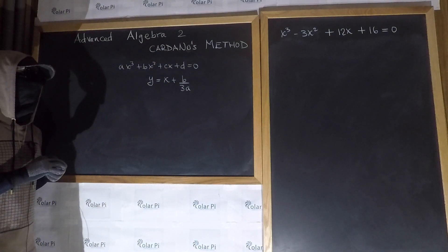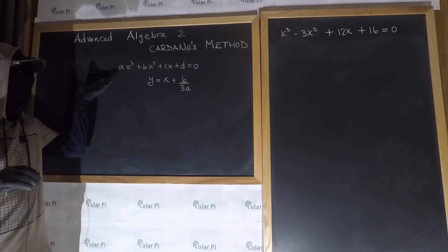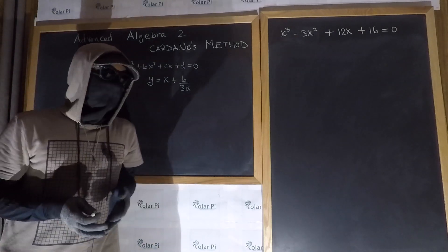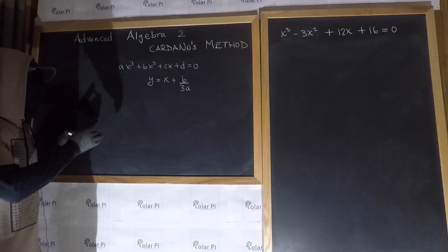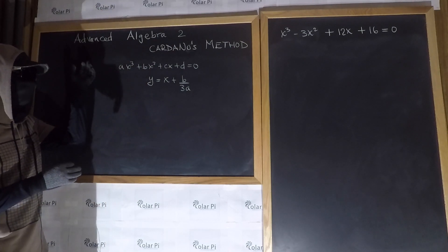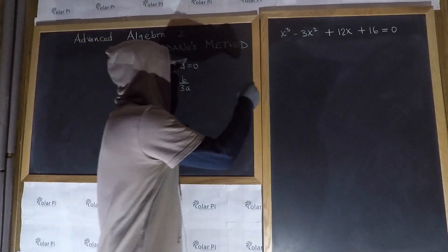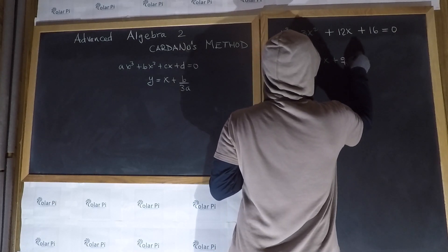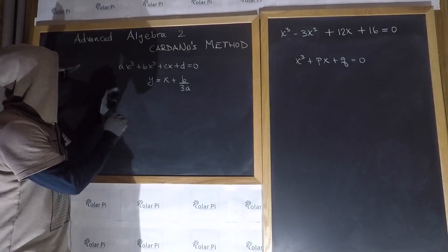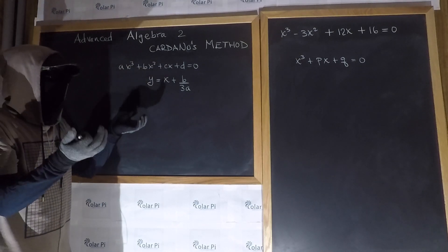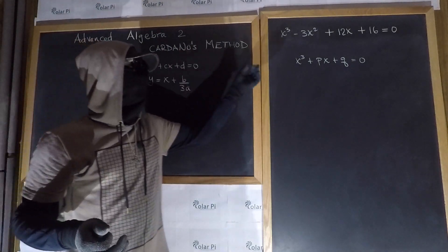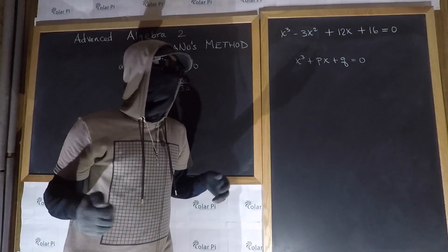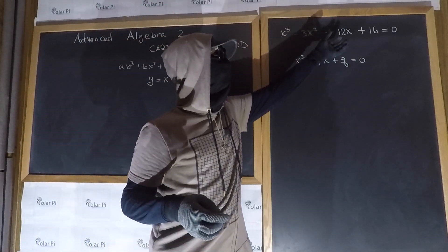In my derivation of the cubic formula, I assumed that a is 1, because if a is not 1, to start, you could just divide everything by a and make sure that a is 1. So this substitution will depress this cubic to be of the form x³ + px + q = 0, thereby getting rid of the square term. That's what depressing the cubic means — getting rid of the square term in the standard cubic. And this substitution will always allow you to depress your given cubic that has all the terms.